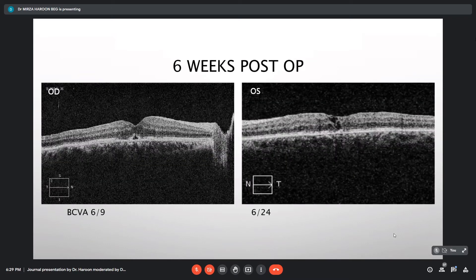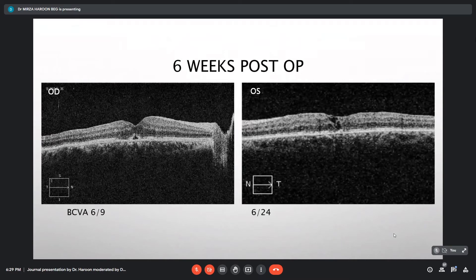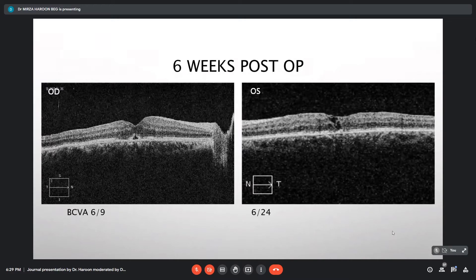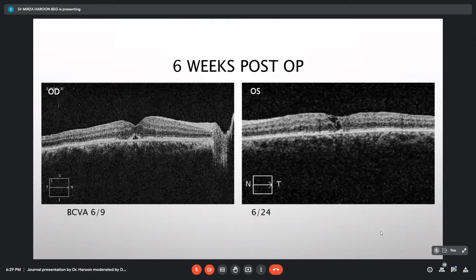OCT scans were taken at 6 weeks post-op. Right eye showed a closed macular hole with some defects at ISOS junction. Left eye showed some incomplete closure with again defective ISOS junction. The visual acuity was 6/9 and 6/24 in respect to right and left eye.